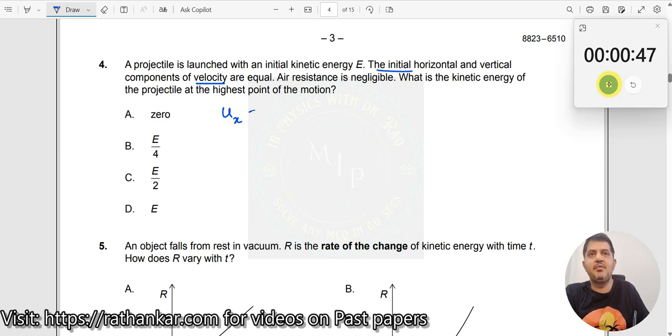You have ux equal to uy, which is already given here. Air resistance is negligible. What is the kinetic energy of the projectile at the highest point of the motion? So this is your projectile motion, it goes like this. This is your highest point over here.